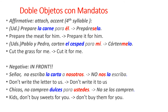Let's see some more examples. Let's imagine I am using the usted command — it's an affirmative command. So remember, if it's affirmative, you attach the pronouns and put the accent mark on the fourth syllable from the end. So I say: prepare la carne para él — prepare the meat for him. I want to say 'prepare it for him.' So: prepare, then my indirect pronoun, then my direct pronoun, then I put my accent mark — one, two, three, four.